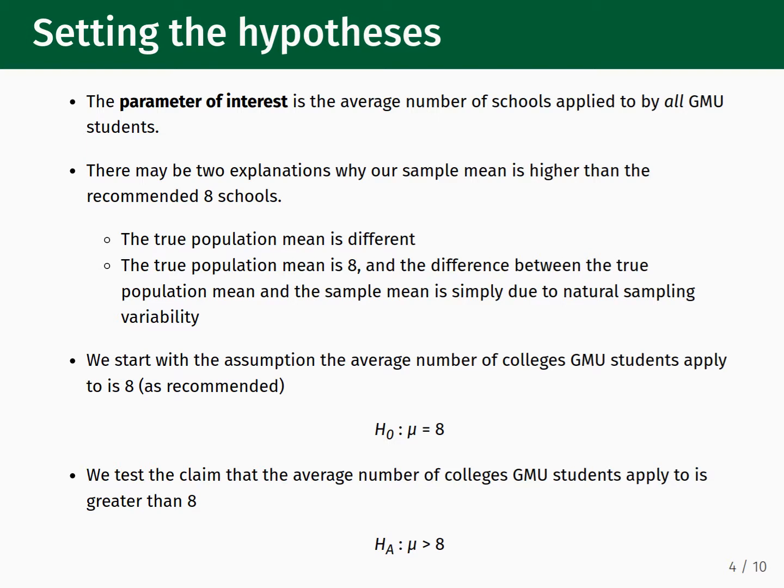In many ways, what we will do here is similar to what we did for the gender discrimination dataset. But now we will follow a more systematic procedure to assess whether or not the average number of colleges GMU students applied to is higher than the recommended amount. In this example, the parameter of interest is the average number of schools applied to by all GMU students.